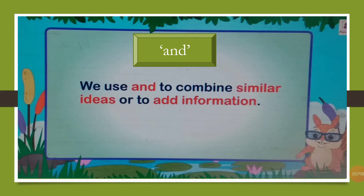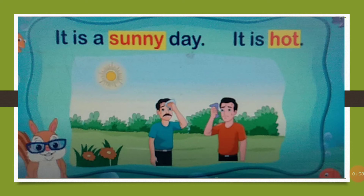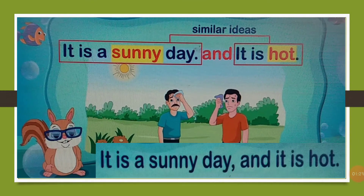We use 'and' to combine similar ideas or to add information. Read these sentences: 'It is a sunny day. It is hot.' These sentences are related to each other with similar ideas. We use 'and' to join words or sentences with similar ideas.